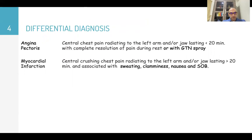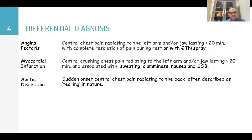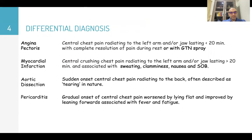For aortic dissection, usually described as central chest pain radiating to the back and described as tearing or ripping in nature. For pericarditis, it's usually gradual onset pain worsened by lying flat and improved by leaning forward and might be associated with fever and fatigue.